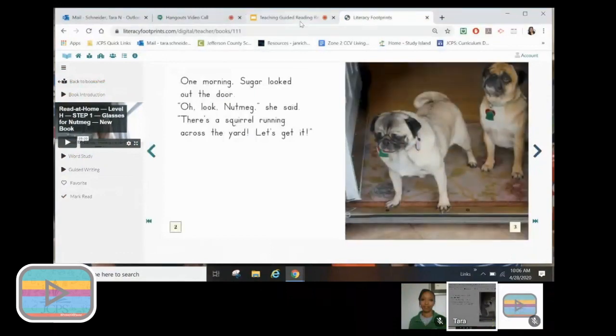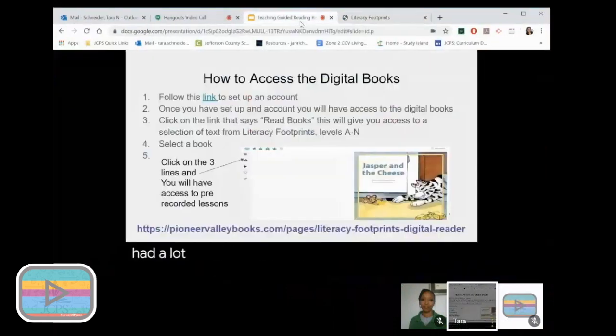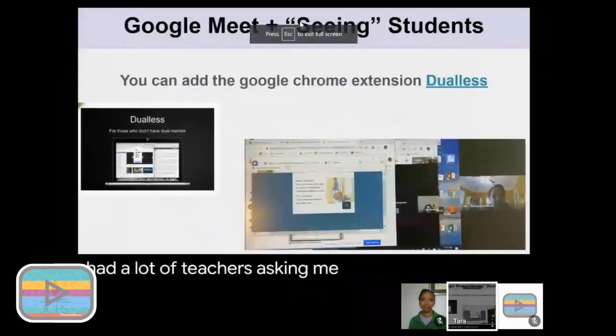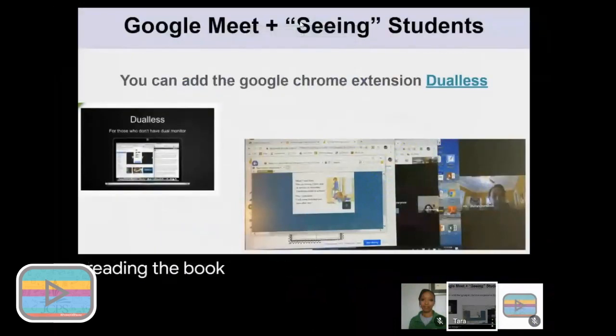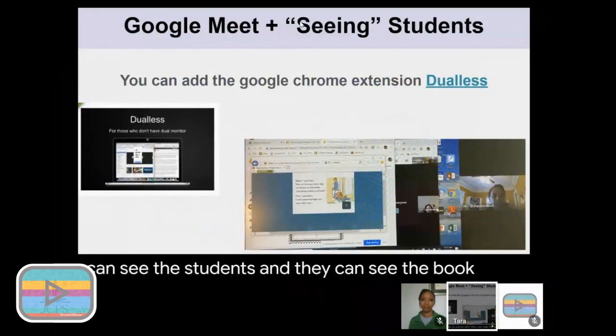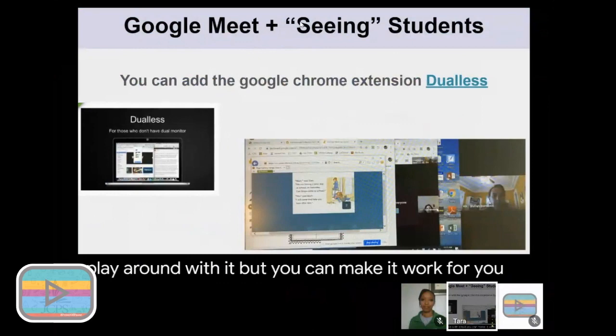I had a lot of teachers asking me for help because they didn't know how to see their students while they were reading the books. I found this Chrome extension dual list. And so that's one way you can do it. You can see, I have it pulled up where the students see me. I can see the students and they can see the books. So that's a good extension. I've seen other ones around. People have been able to layer different windows. So play around with it, but you can make it work where you can see the students and the book at the same time.